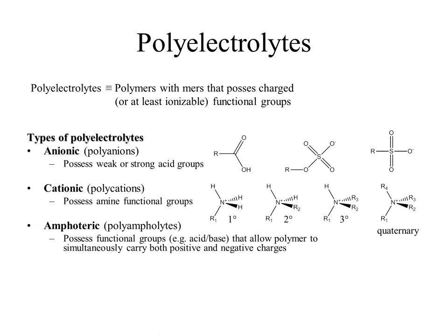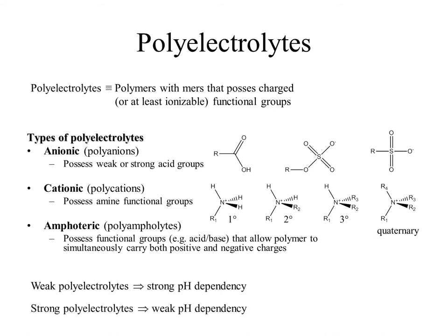Lastly, polyampholytes are simply polymers, typically copolymers, which possess both positive and negative functional groups. Before we move on, I want to point out the relationship between pH and the charged state of the various polyelectrolytes. Weak acids are charged only if deprotonated, which occurs only if the pH is above the pKa of the acid functional group. Similarly, weak bases are only charged when protonated, and this only occurs if the pH is below the pKa of the amine functional group. Thus, weak polyelectrolytes, whether they are acids or bases, are strongly dependent on pH. Conversely, strong polyelectrolytes — like sulfates, sulfonates, and the quaternary amines — are relatively pH-independent, because they remain charged over most normal pH ranges.